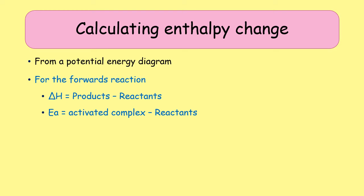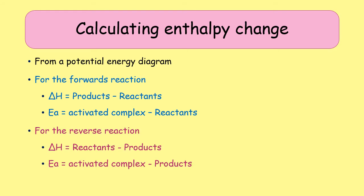If you're dealing with a reversible system, you can also be asked about the reverse reaction. For the reverse reaction, you swap reactants and products around: the enthalpy change is the energy of the reactants minus the energy of the products, and the activation energy is the activated complex minus the energy of the products. Delta H for the forward reaction will be the opposite sign of the reverse reaction, but the activation energies for each direction can be quite different from one another.